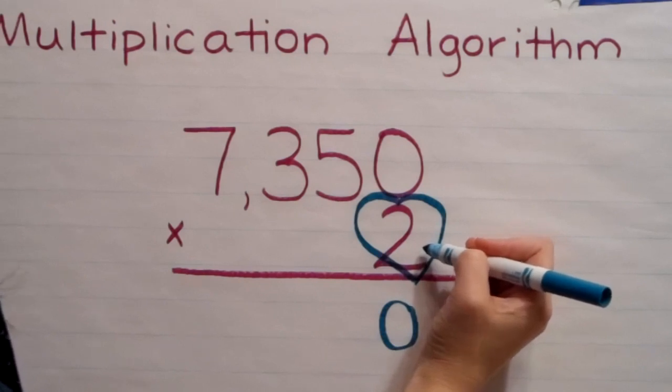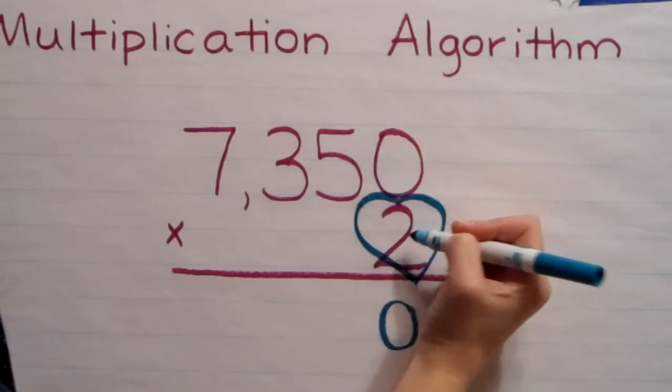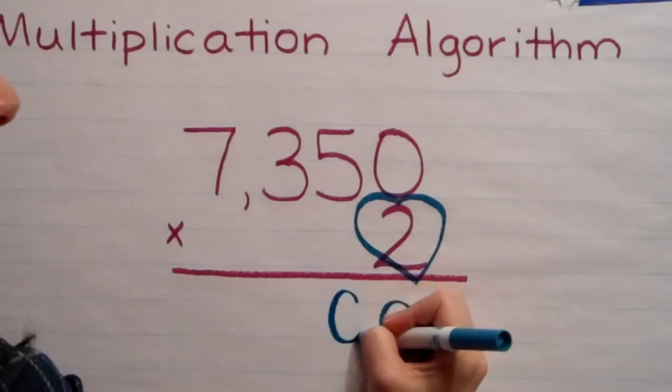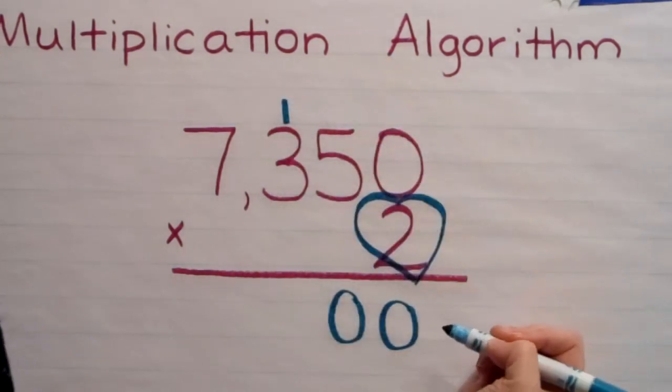Now I always go back to my heart. So I go to my heart, which is two, and I multiply it by the next place value, which is the tens place. Two times five is ten. I put the zero below the tens place, and I'll regroup that one above the hundreds place.